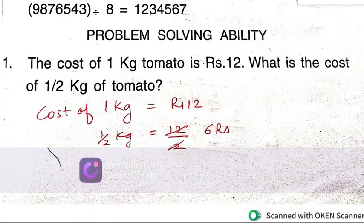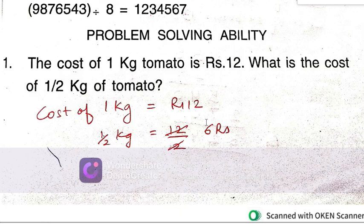Coming to problem solving activity: cost of 1 kg tomato is Rs. 12. So half kg how much will be? 12 by 2, it would be Rs. 6.